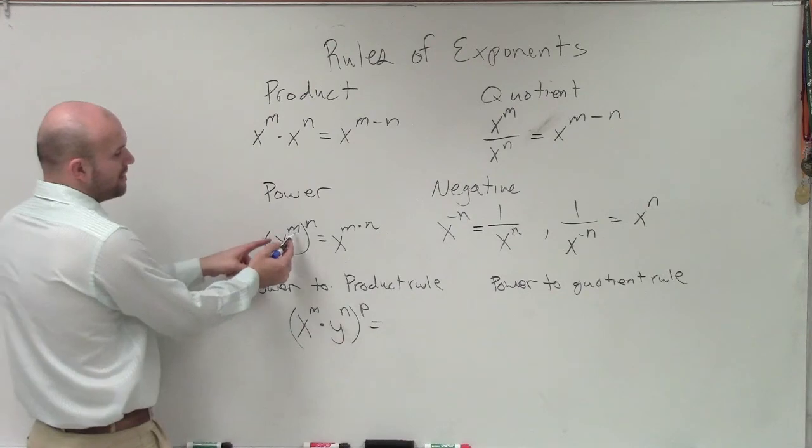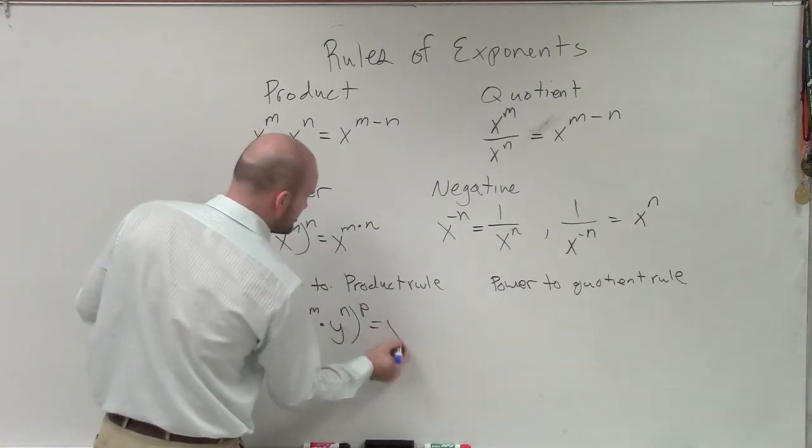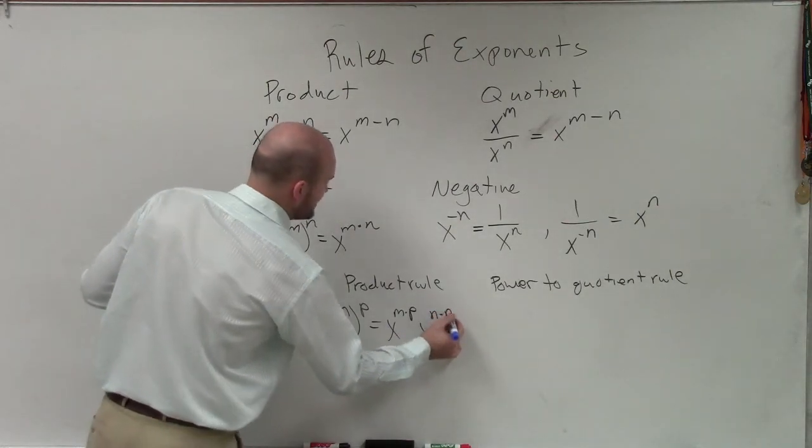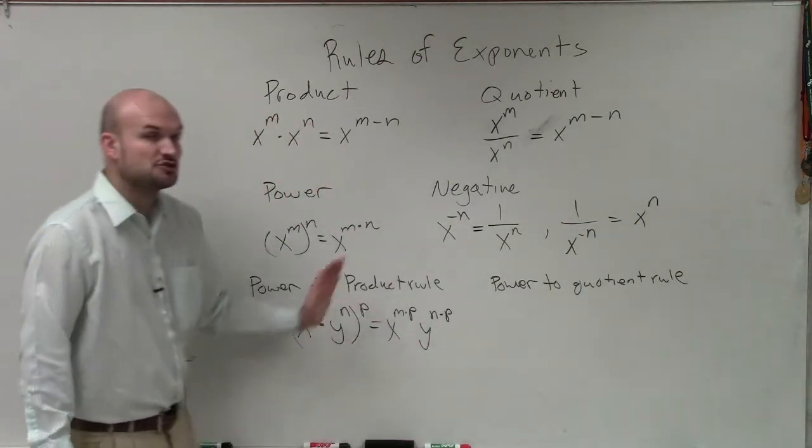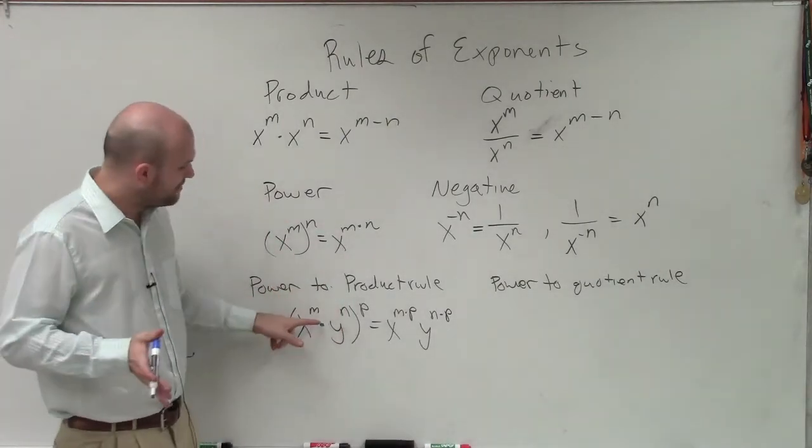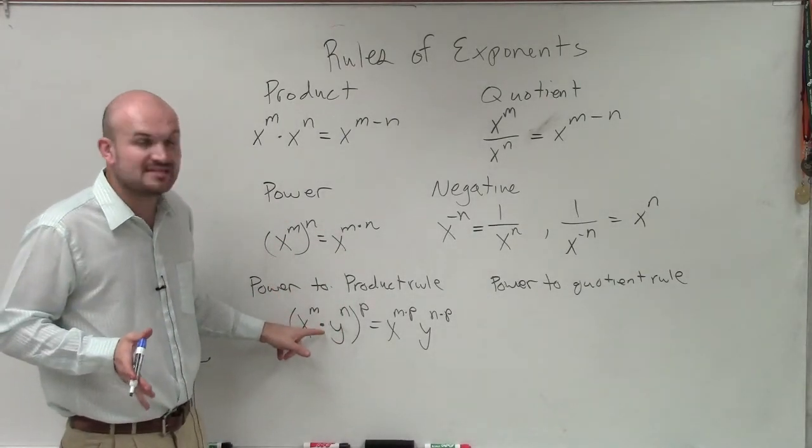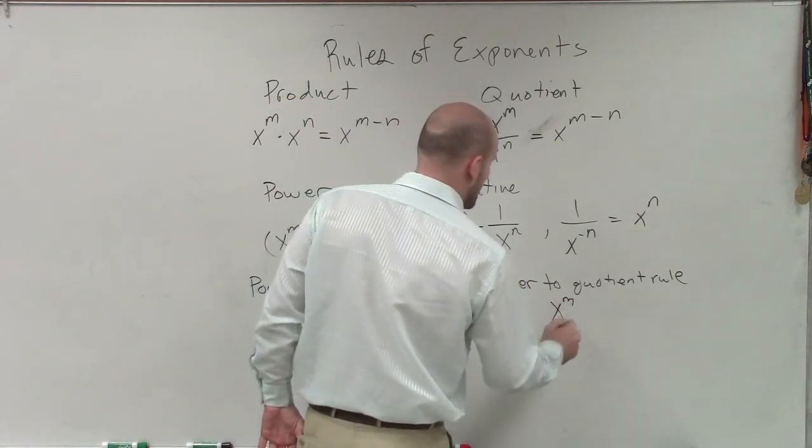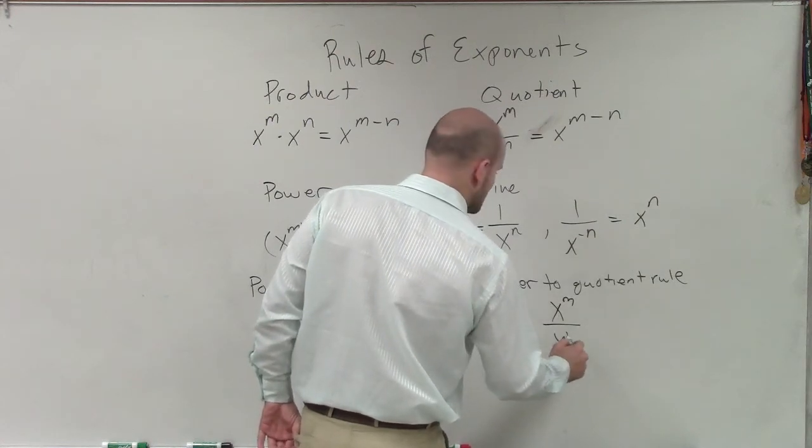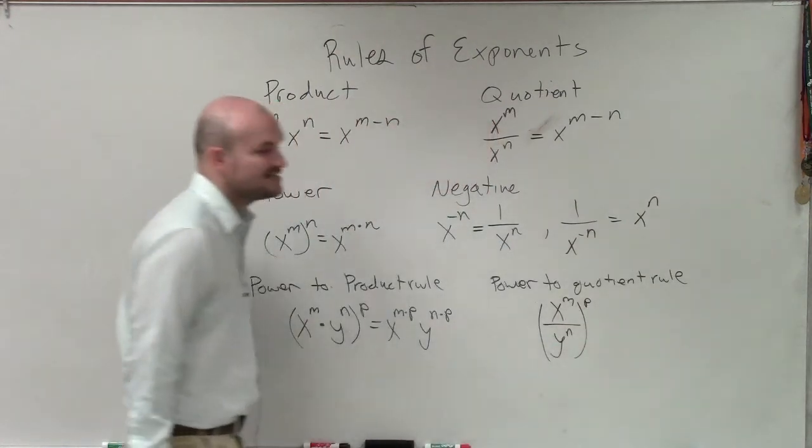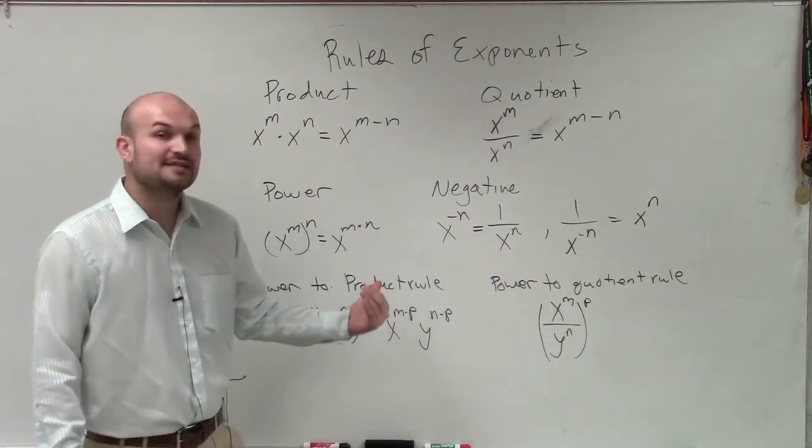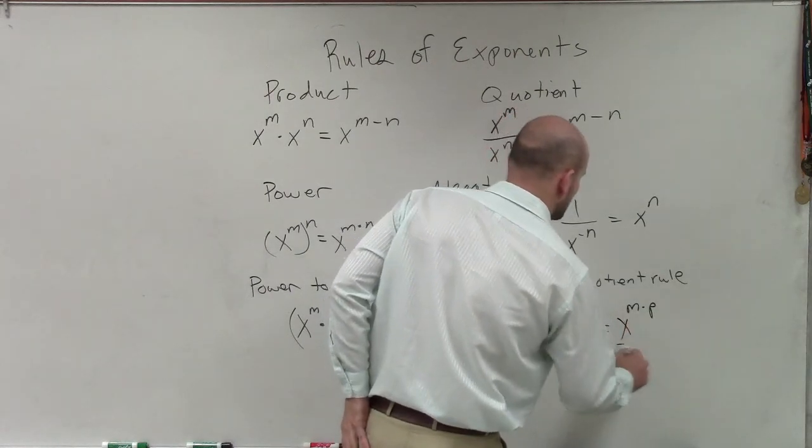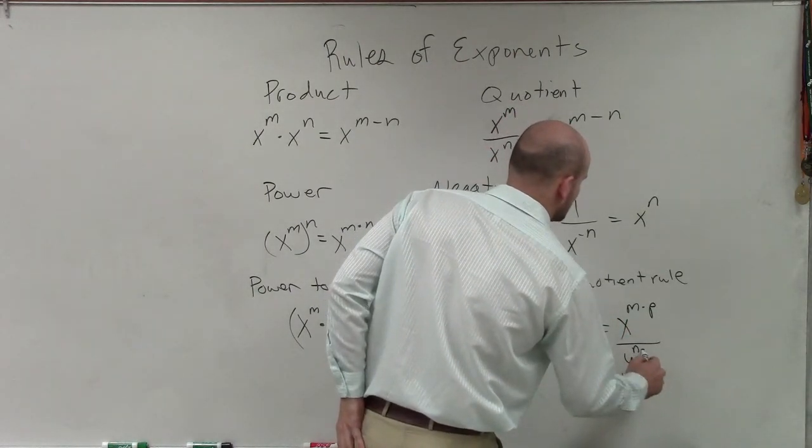So now, remember, when we take a power and we raise it to another power, this is now going to be x to the m times p times y to the n times p as well. So we can distribute this. But please remember, this does not work for when my two exponents are separated by addition or subtraction. But it works for the product as well as the quotient. So let's say I have x to the m divided by y to the n. If those are both raised to the p power, now I can distribute that p to both of my powers. So therefore, this can simplify to x to the m times p divided by y to the n times p.